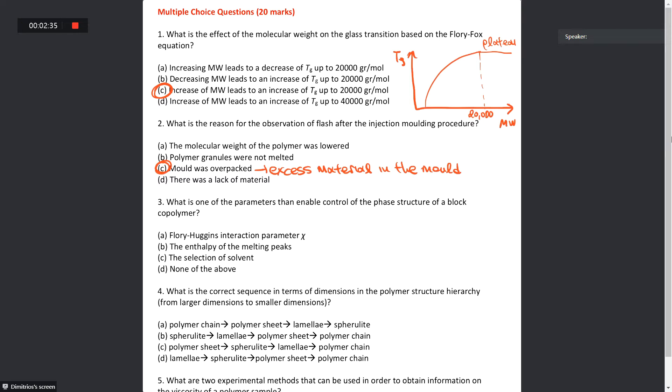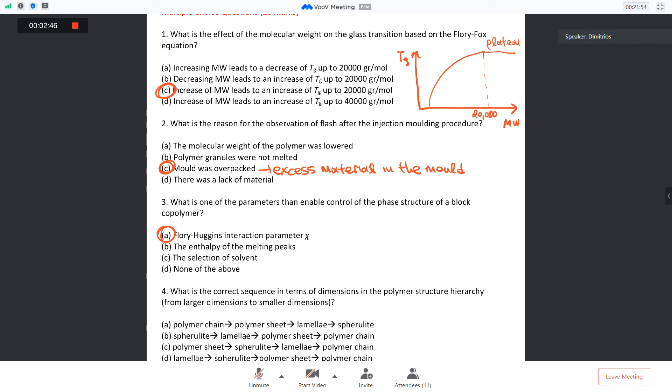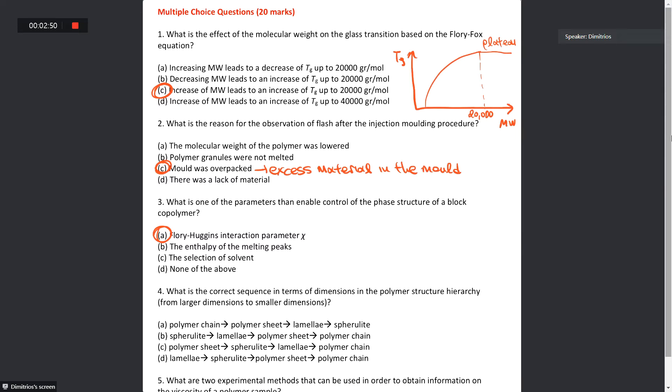Question number three: Which is one of the parameters that enable control of the phase structure of a block copolymer? It's quite obvious. The correct answer is the Flory-Huggins interaction parameter. All the others are completely irrelevant. But it's not only the Flory-Huggins interaction parameter. We also said plus the degree of polymerization is very important, and also the composition of the copolymer. How much of each phase, of each monomer we have within the copolymer.